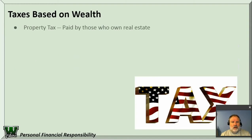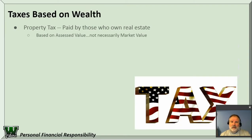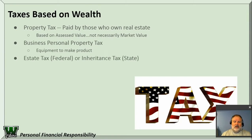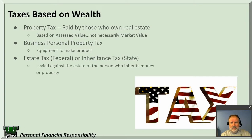Then there's taxes on your wealth. These are property taxes — if you own real estate, you own a home, you pay real estate taxes. It's based on assessed value, not necessarily market value, though Indiana supposedly uses a market-based system with various exemptions. Then there's the business personal property tax — that's a tax on the equipment you own to make product, and this will vary state by state. And then there's an estate tax or inheritance tax charged by the state, levied against the estate of a person who inherits money or property. If you get a large inheritance, you'll have to pay some tax on it. And if somebody gives you a check for $13,000, you're going to have to pay a gift tax on it as well.